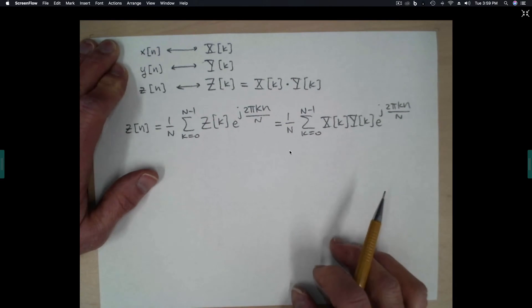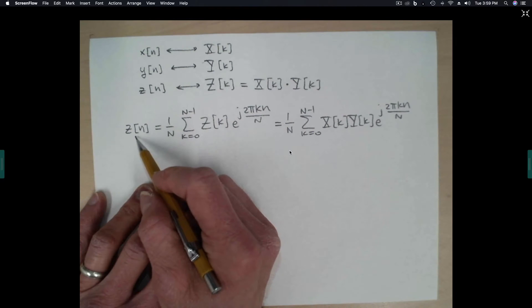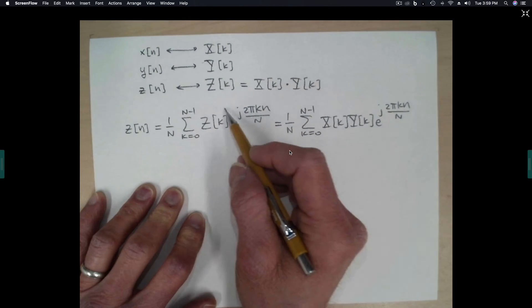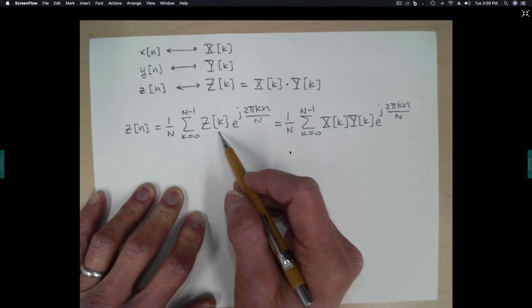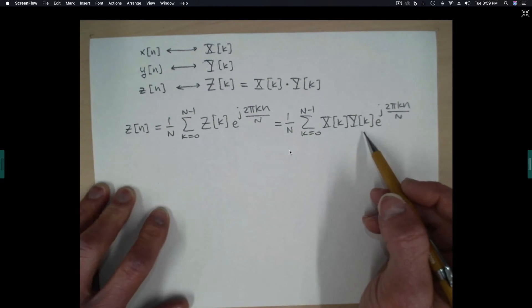To help us get going on this, I've written down the first couple of steps. So the time domain expression z[n] is equal to the inverse DFT of Z[k]. And then we know that Z[k] is equal to X times Y in the frequency domain.